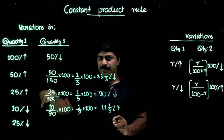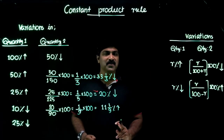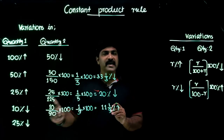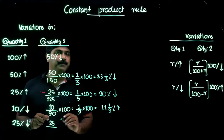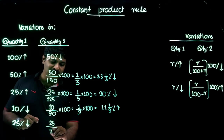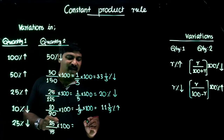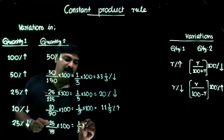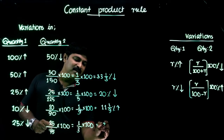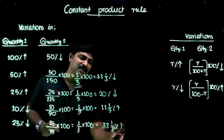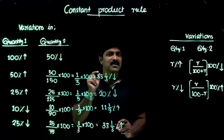If there is a 10 percent decrease in speed, it will increase the time consumption for covering a constant distance by 11 and 1/9 percent — a frequently tested question type. For the last example: a 25 percent decrease in the first component gives 25 / (100 − 25) = 25 / 75 = 1/3 × 100 = 33 and 1/3 percent increase. It's a magical result applicable in many different situations.